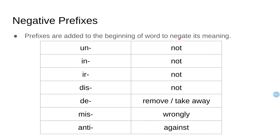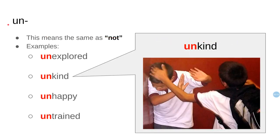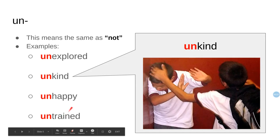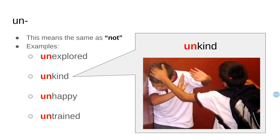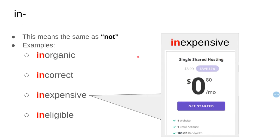We'll start with 'un-,' which means the same as 'not.' Examples: unexplored, unkind, unhappy, untrained. Look at this boy hitting another boy — he's not kind, he is unkind.